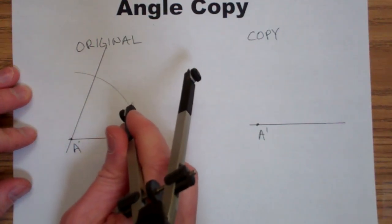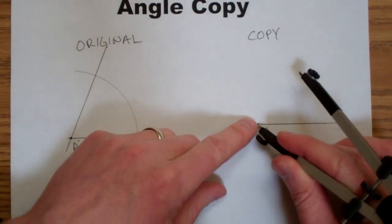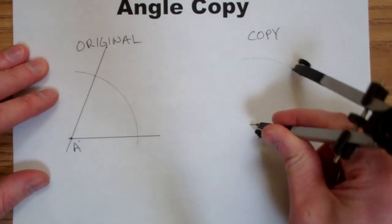Then without moving my compass, I'm going to draw that same exact arc centered at point A prime on my copy.